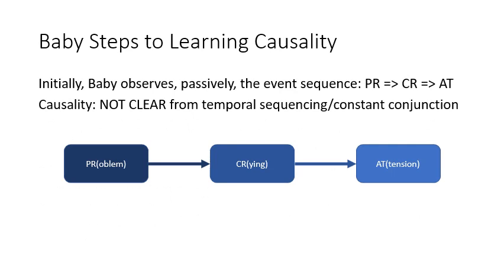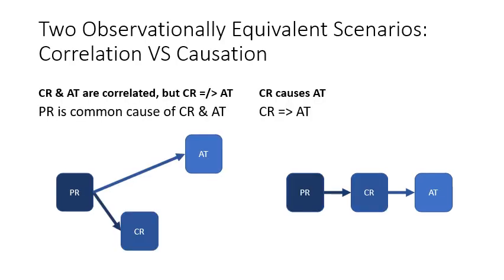We look through some simple examples to see how babies can learn about causality. Initially, babies experience some discomfort and they respond by crying — this happens naturally, it is built in. The crying attracts the attention of some adults; probably the mother comes running to see what's wrong. So the babies are passive observers initially: some discomfort occurs, then crying occurs — which they experience but don't voluntarily produce; the crying is produced by the discomfort automatically. And this leads to adult attention. They watch this sequence of events happen to them. Just the sequencing does not establish causality.